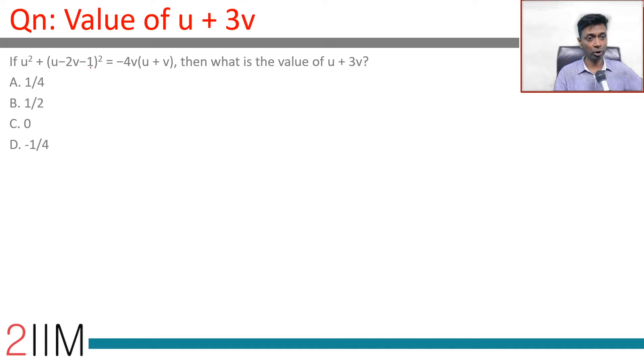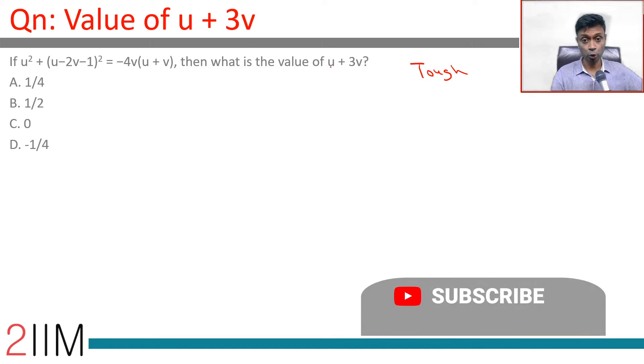u square plus u minus 2v minus 1 the whole square equals minus 4v u plus v. It is a very tough question when just u and v and only one equation and a quadratic thrown in for good measure.